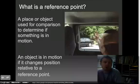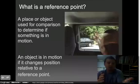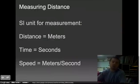A reference point is a place or object used for comparison to determine if something is in motion. An object is in motion if it changes position relative to that reference point. So as you can see, you've got this wonderful young lady looking out the window. She sees the cars, and she sees the cars are not moving. She is. Therefore, she's using that car as a reference point.